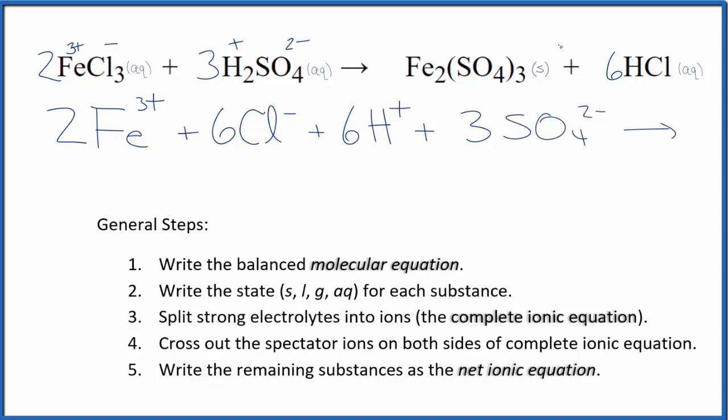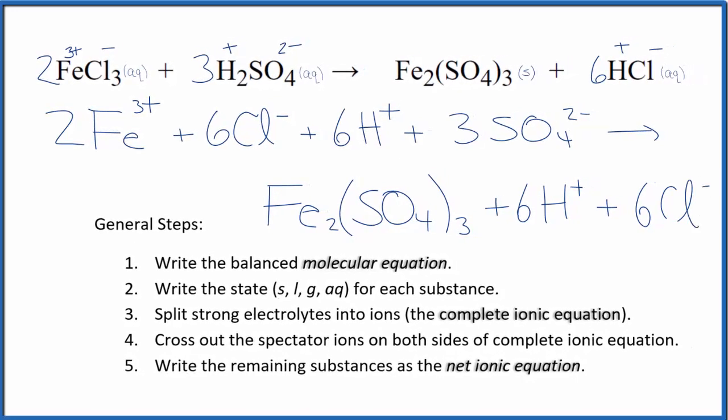For net ionic equations, we don't split solids apart. This is our precipitate, so we're going to keep this together. And then hydrogen, we said that was positive, the chloride ion negative. Six hydrogen ions, just like the reactants, plus six chloride ions, just like the reactants. So at this point, we have our complete ionic equation. We can cross out spectator ions. They're on both sides of the complete ionic equation.